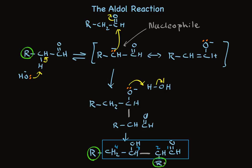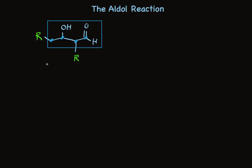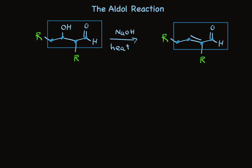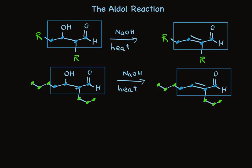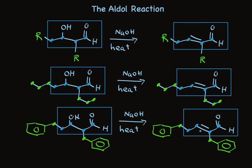Now let me show you something we can do with these products. This is the aldol addition product I showed you at the beginning. When this molecule is treated with base and heated, it causes dehydration. We don't normally see dehydration in base, but we do in this case because it makes an alpha-beta unsaturated aldehyde. That conjugated double bond is much easier to make. So now we have an alpha-beta unsaturated aldehyde. When we look at the specific examples from earlier, heating with base makes an alpha-beta unsaturated aldehyde in every case. The aldol addition product is a 1,3-hydroxy aldehyde, and the product once you dehydrate it is an alpha-beta unsaturated aldehyde. In every case, the R group appears twice, on the second carbon and on the fourth carbon.